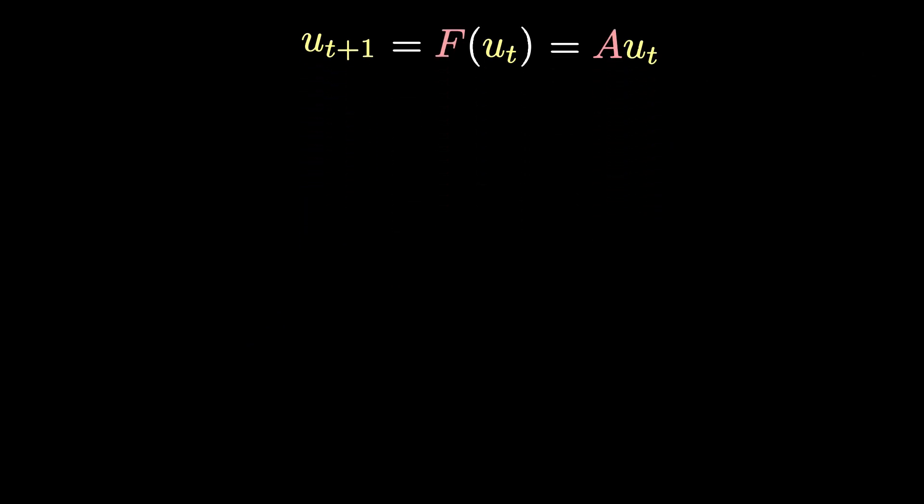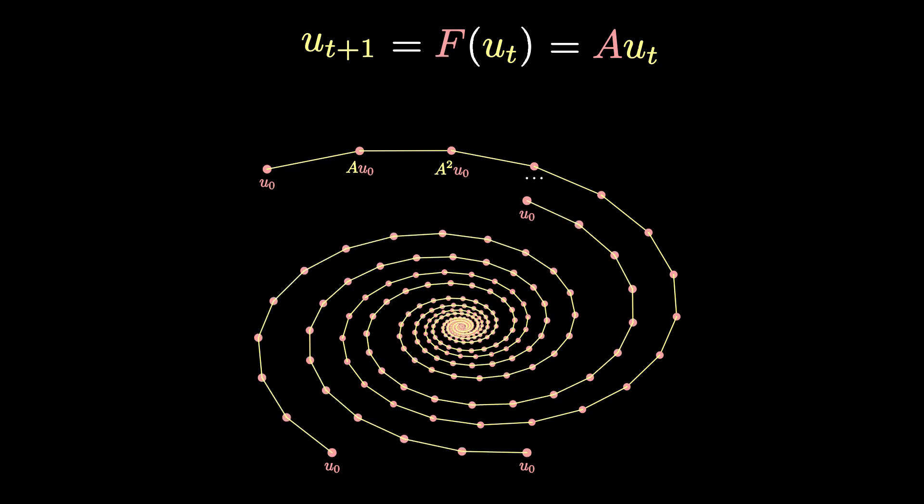In this linear setting, asymptotic stability means that if you start from some initial state u0 and you keep multiplying by the same matrix A again and again, the trajectory converges to the origin eventually, and that for any initial state u0.